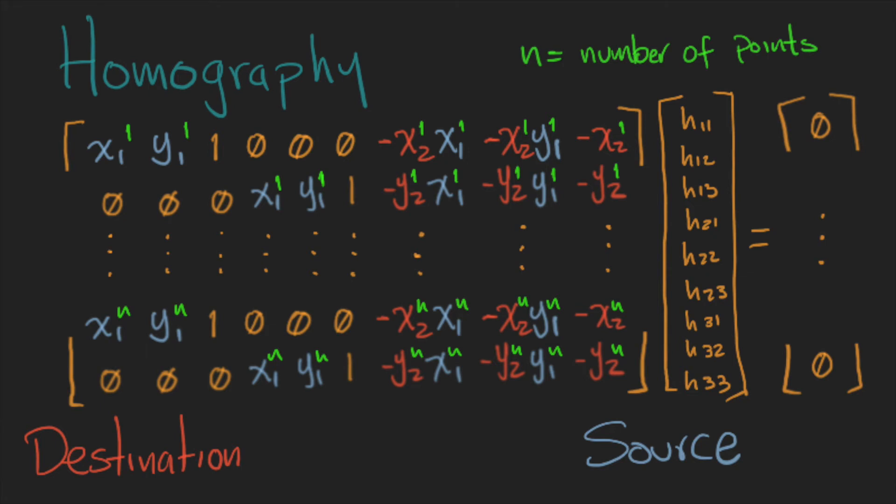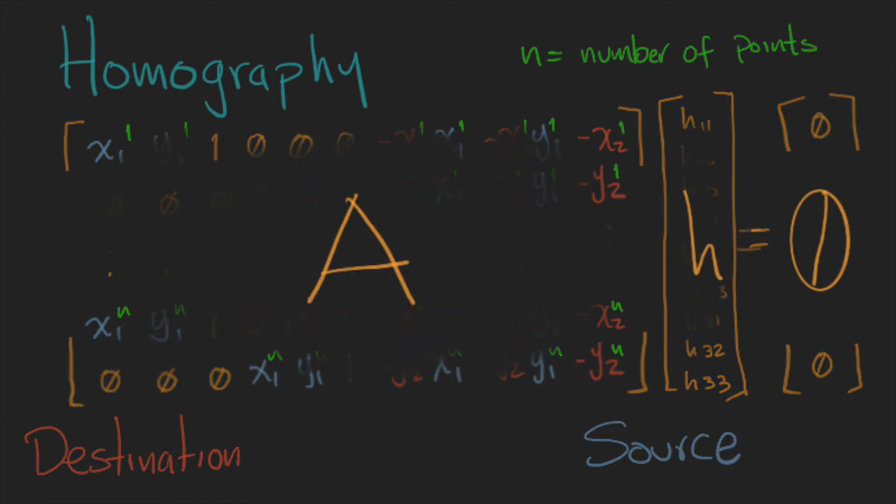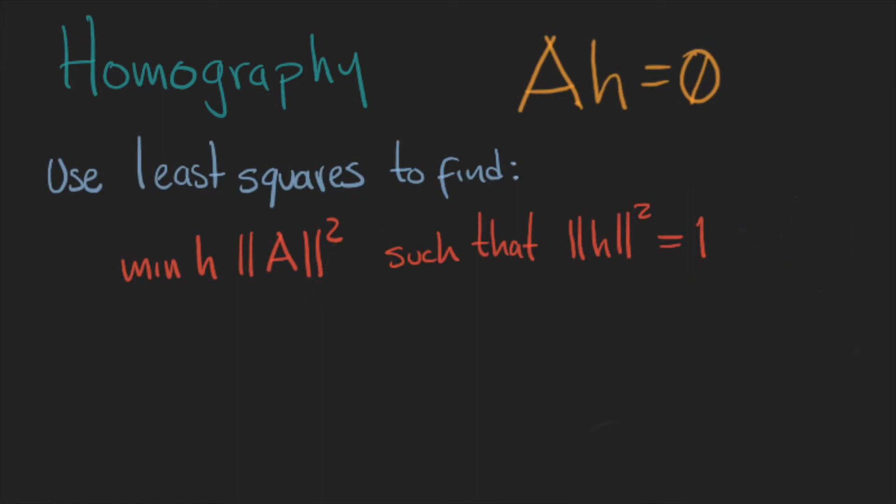This gives you a linear system of the form Ah = 0, that can be solved with constrained least squares, where the constraint is that h squared is equal to 1.